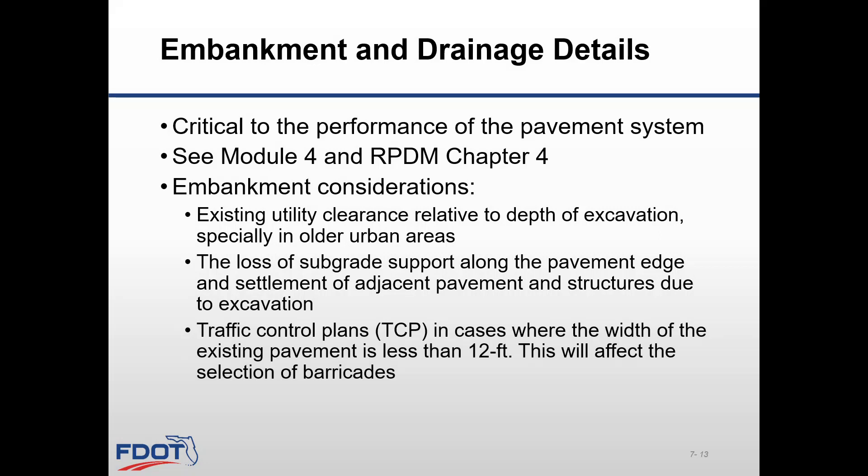Embankment and drainage details are critical to the performance of the pavement system, as discussed in Module 4 and also addressed in the Rigid Pavement Design Chapter 4. Embankment considerations include existing utility clearance relative to depth of excavation, especially in older urban areas, the loss of subgrade support along the pavement edge, and settlement of adjacent pavements and structures due to excavation. Traffic control plans in cases where the width of the existing pavement is less than 12 feet will affect the selection of barricades.